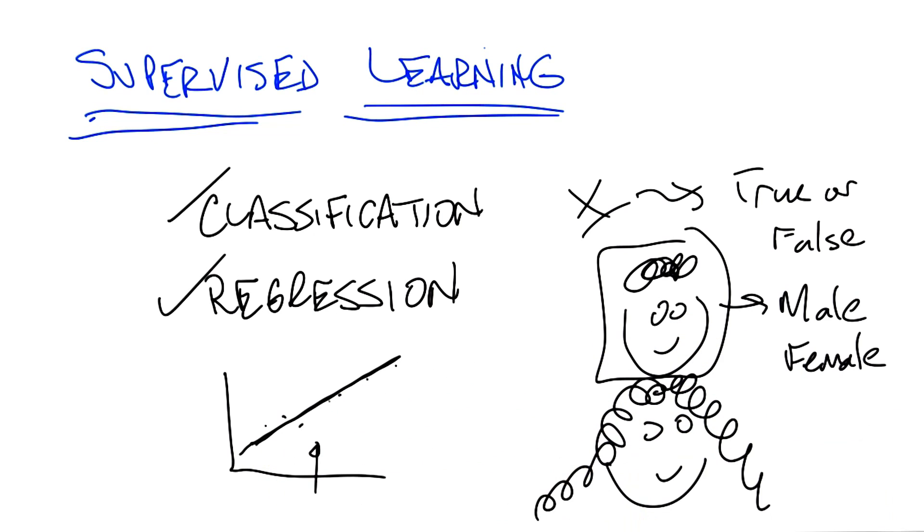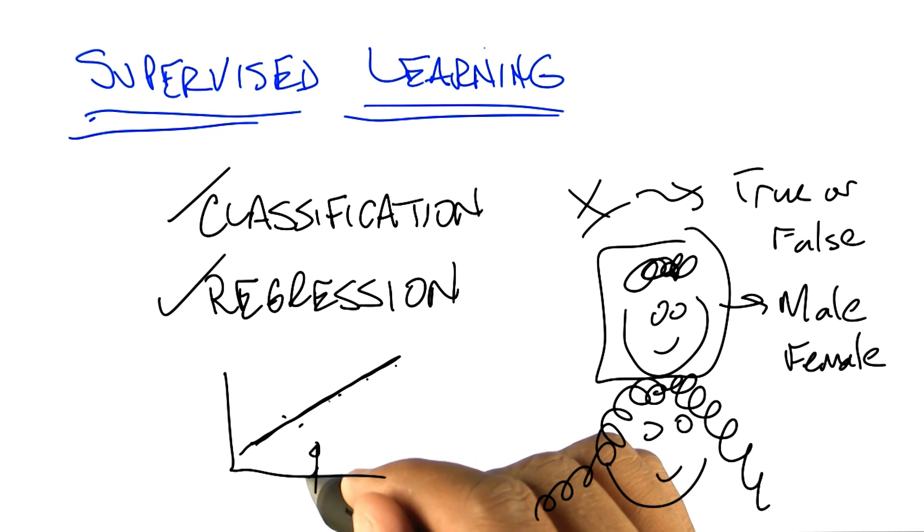So we may pretend that these are examples of a line. And so given a point here, I might say the output is right there. Okay, so that's regression. But we'll talk about that in a moment. Right now, what I want to talk about is classification.